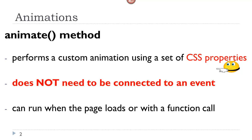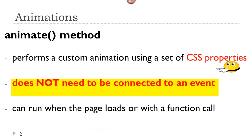Animations are created in jQuery using the animate method. What animations do, they perform some kind of an effect where something is happening over a period of time by manipulating a certain set of CSS properties. An animation does not need to be connected to an event, whereas an effect does. An animation can run when the page loads or just within any function call.